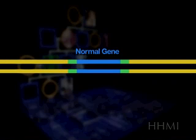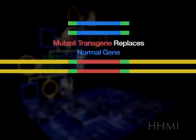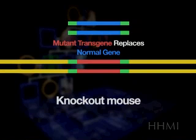A mutant transgene is created with flanking sequences that are identical to the DNA surrounding the normal target gene, and the transgene replaces the normal gene. If the mutant gene is disabled, the resulting transgenic mouse is called a knockout mouse.